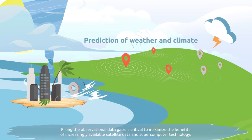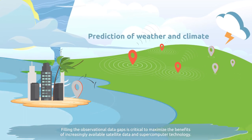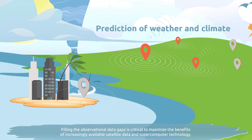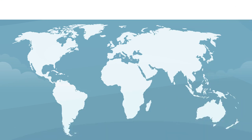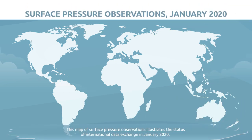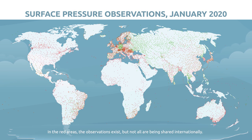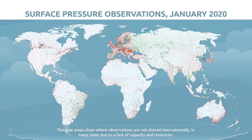Filling the observational data gaps is critical to maximize the benefits of increasingly available satellite data and supercomputer technology. This map of surface pressure observations illustrates the status of international data exchange in January 2020. The green areas are meeting the international data requirements. In the red areas, the observations exist, but not all are being shared internationally.